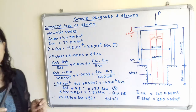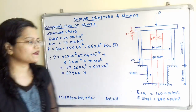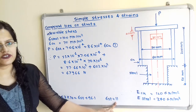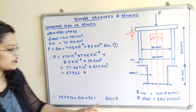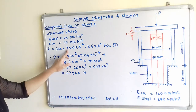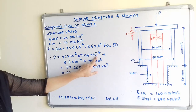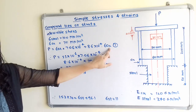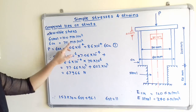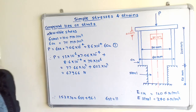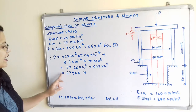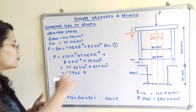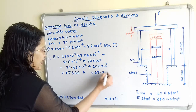Now we calculate the value of P from equation 1. P = sigma_steel × A_steel + sigma_copper × A_copper = (11 × 10⁶ × 7.06 × 10⁻⁴) + (70 × 10⁶ × 8.6 × 10⁻⁴). Solving this gives P = 67,966 N, which can be written as 67.9 kN.